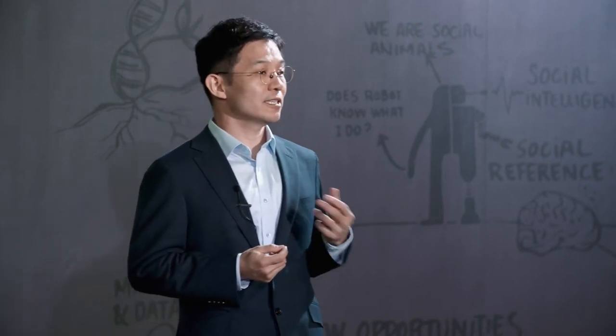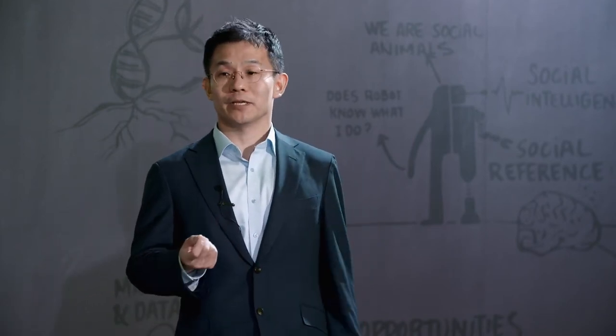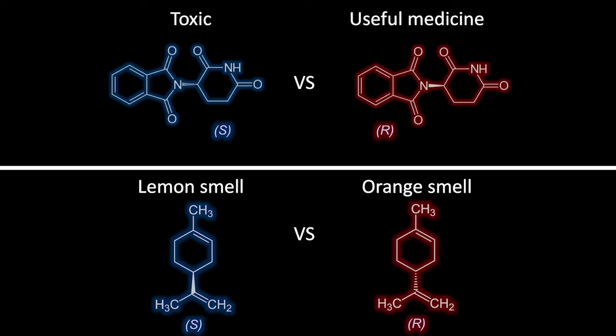Different chirality exhibits completely different properties. For example, the right-hand molecule is a very useful medicine. However, the left-hand molecule, although the composition is the same, has a different chirality and is toxic. Also, depending on the chirality, molecules can have a different smell — like orange versus lemon.